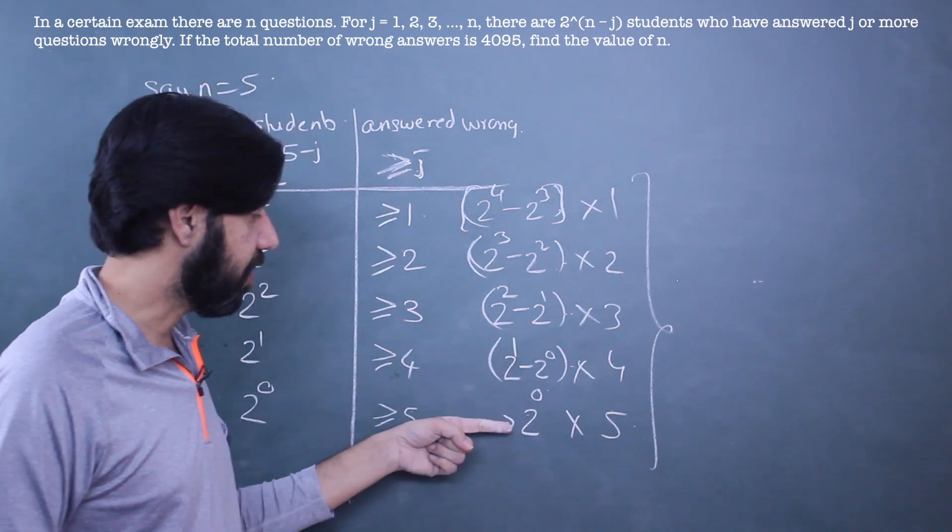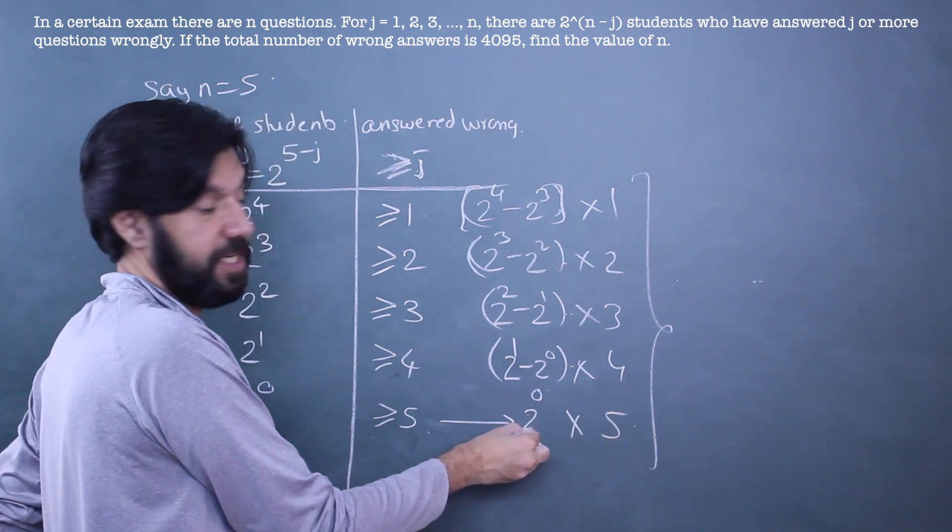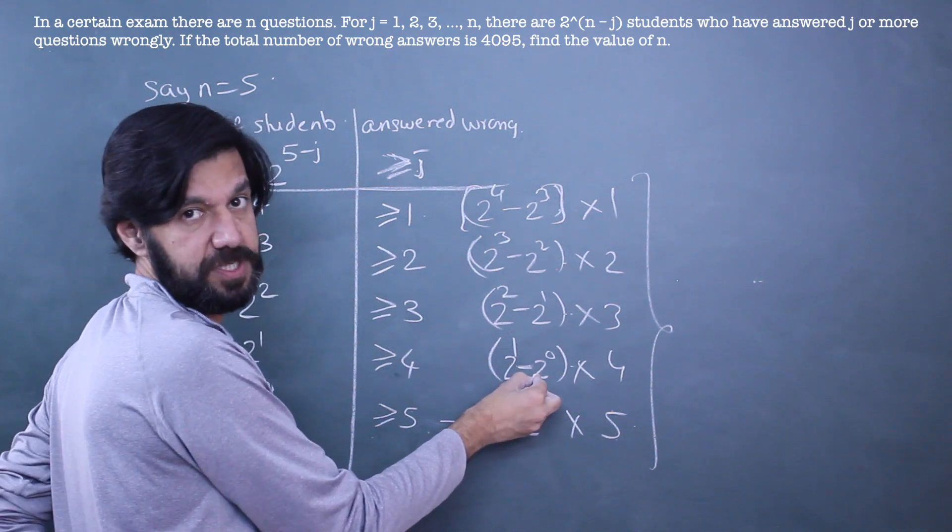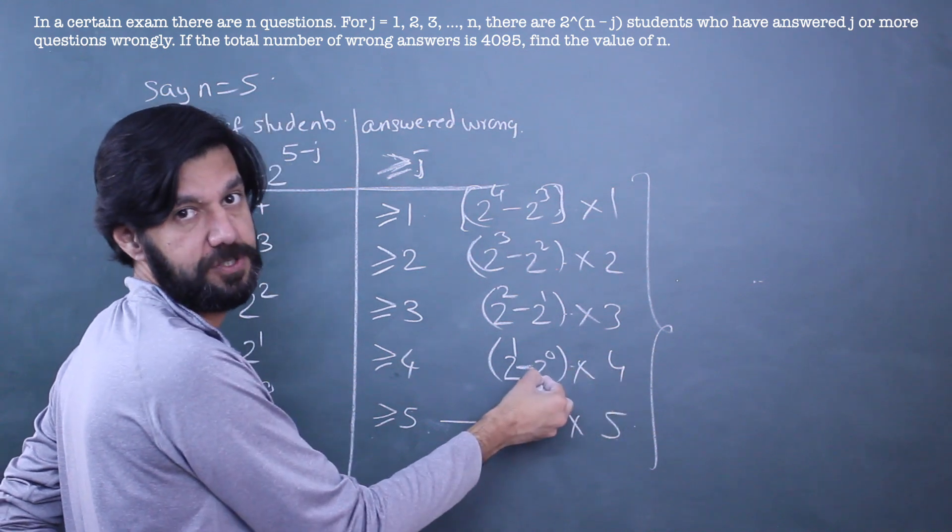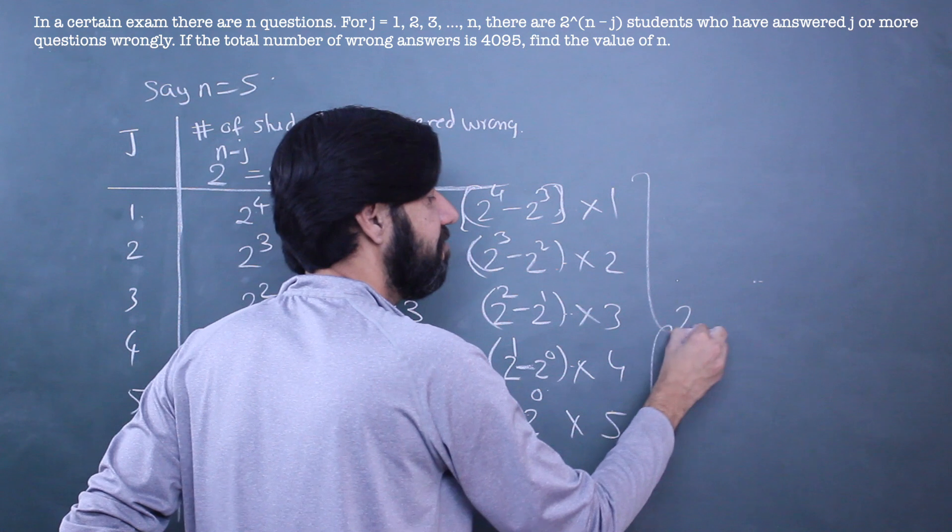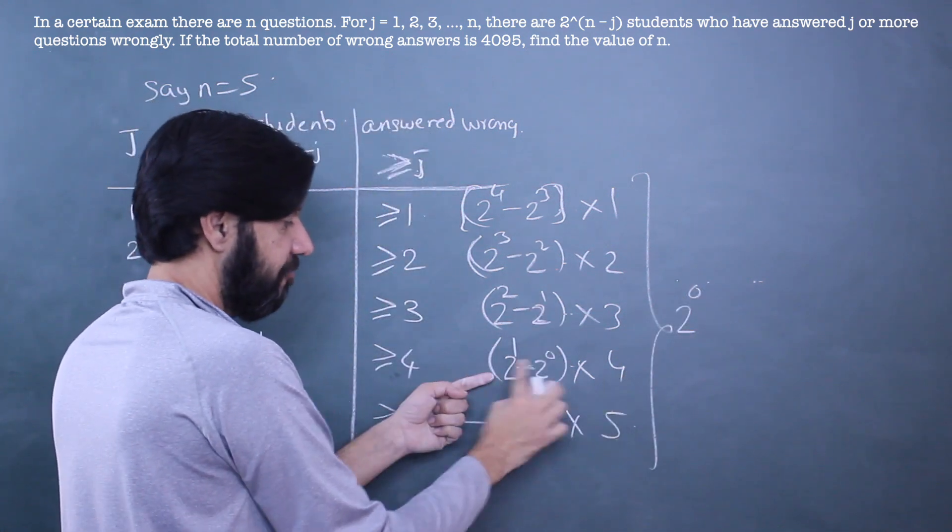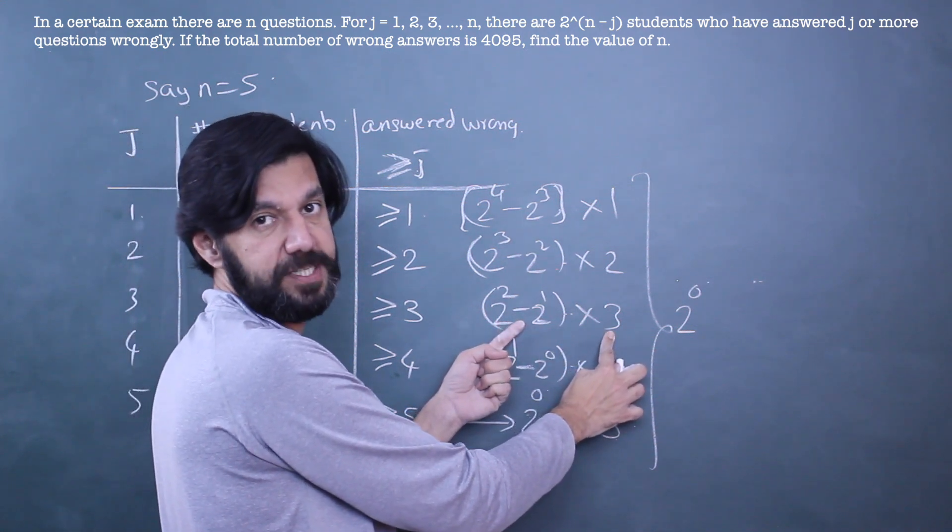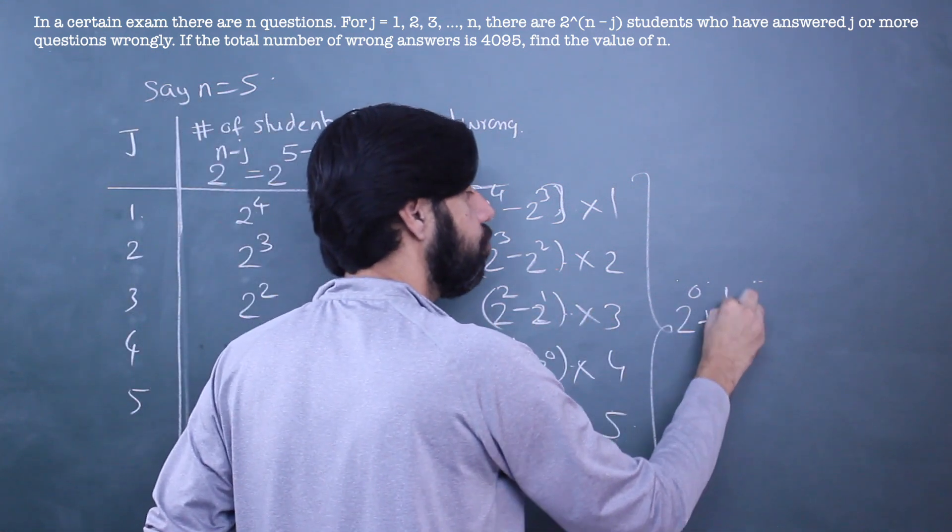Let me add them from bottom because this is a lone term. This is 5 times 2^0 plus 4 times 2^0, sorry this is a minus, plus times minus 4 into 2^0. So that 2^0 could be taken common, which is going to be left with 2^0. What about 2^1? There's 4 into 2^1 and minus 3 into 2^1. So 2^1 can be taken common, 4 minus 3 will be 1. So there's 2^1.